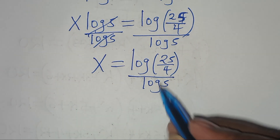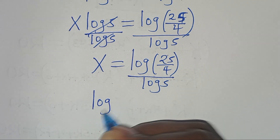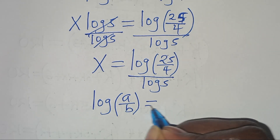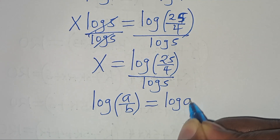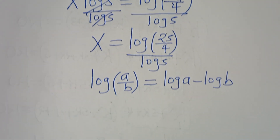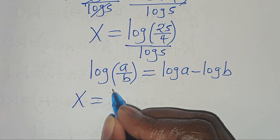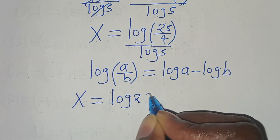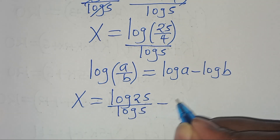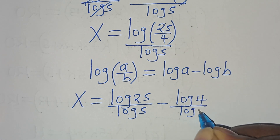Now the next step is that log 25 over 4 is in the form of log a over b, which we can express as log a subtract log b. Applying this logarithm property, we have that x is equal to log 25 divided by log 5, subtract log 4 divided by log 5.